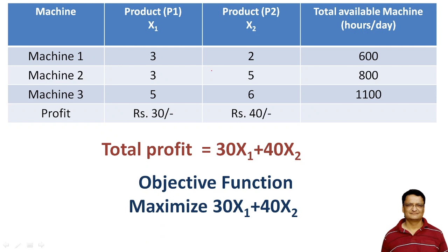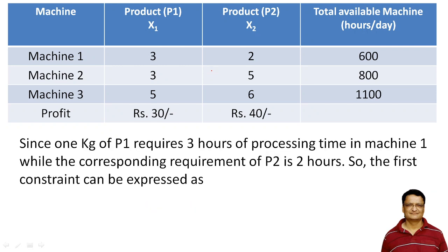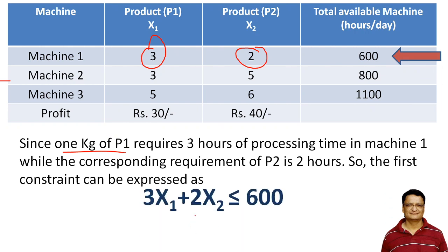Now let us move to the constraints. One kg of P1 requires 3 hours of processing time in machine 1, and P2 requires 2 hours in machine 1. So the first constraint, related to machine 1, can be expressed as: 3x1 + 2x2 ≤ 600, since machine 1 is available for only 600 hours. This becomes your first constraint.